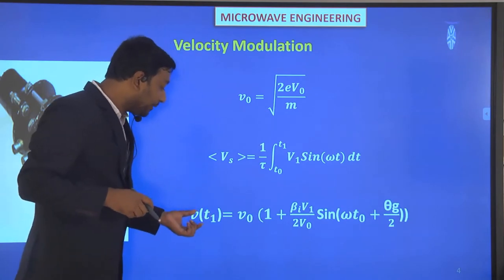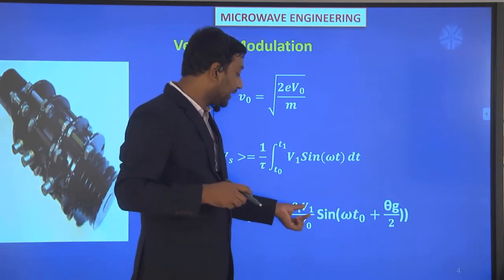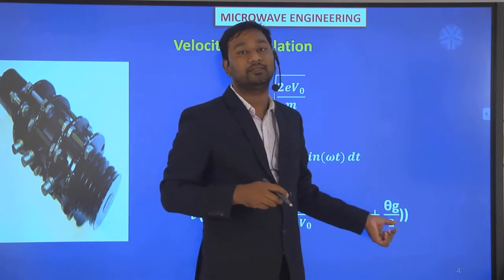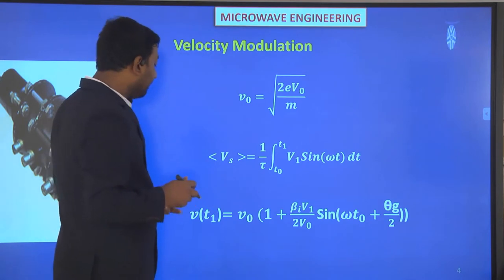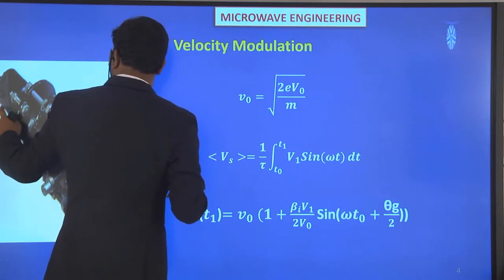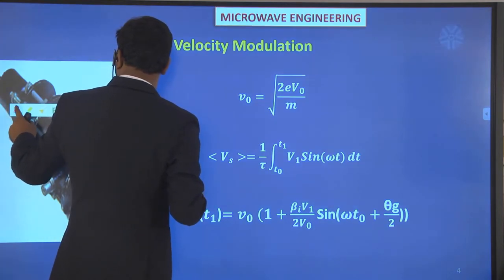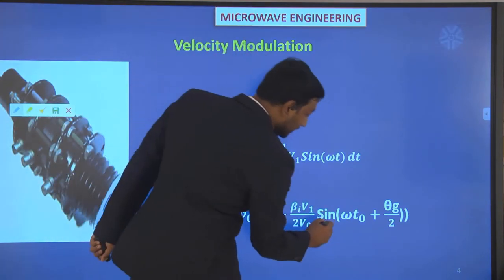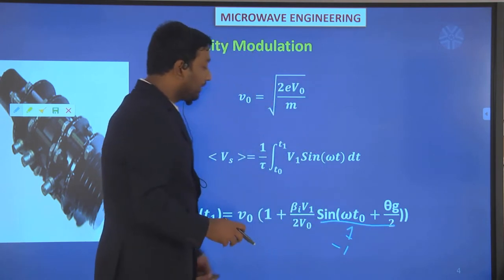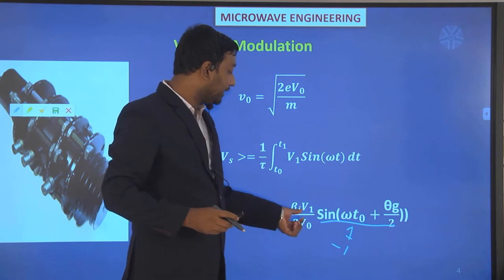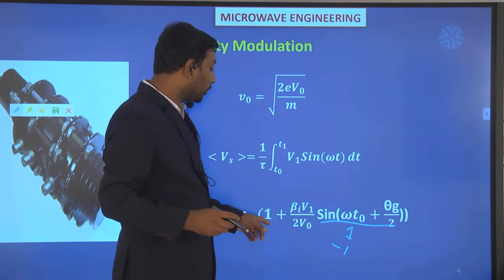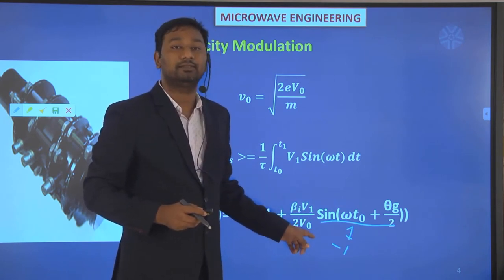The modulated velocity vt1 equals V0 times (1 plus β_i·V1 divided by 2V0) times sine(ωt0 plus θ_g/2). The maximum value occurs when the sine value becomes 1, giving V0(1 plus β_i·V1 / 2V0), and the minimum value occurs when sine equals −1, giving V0(1 minus β_i·V1 / 2V0).